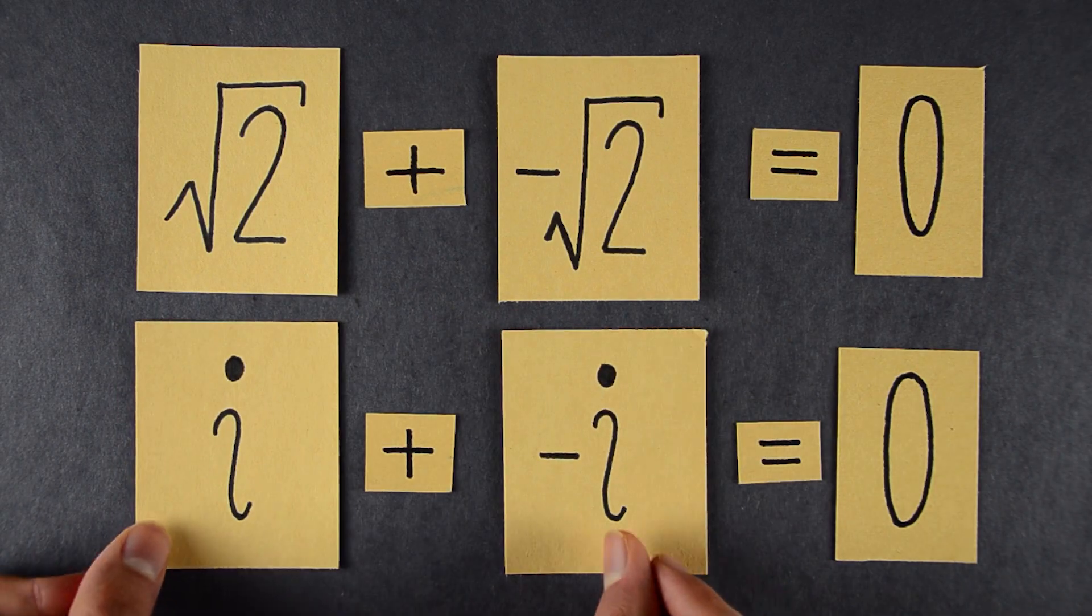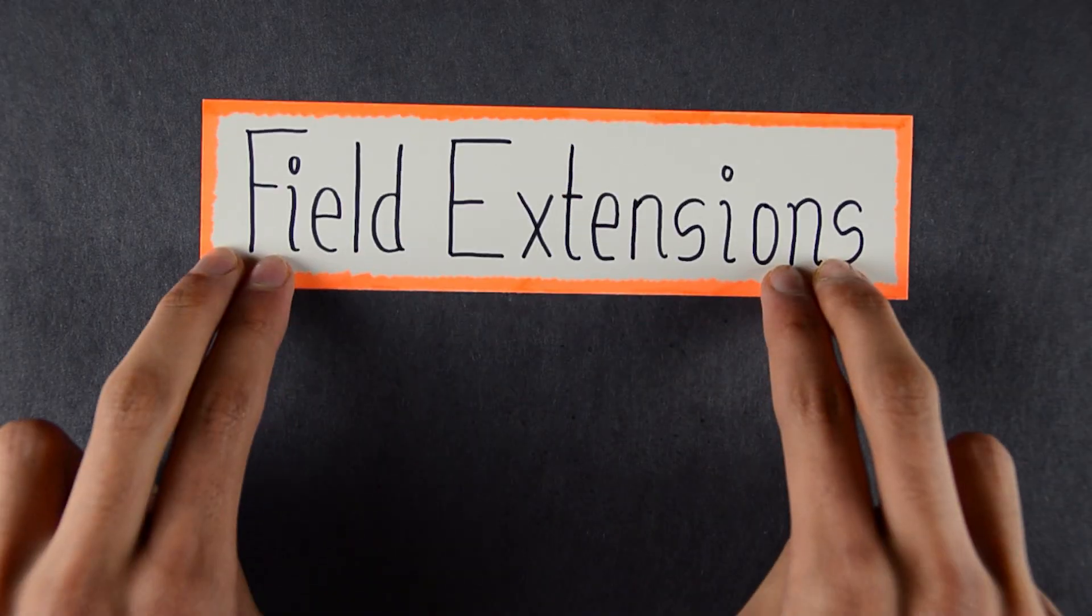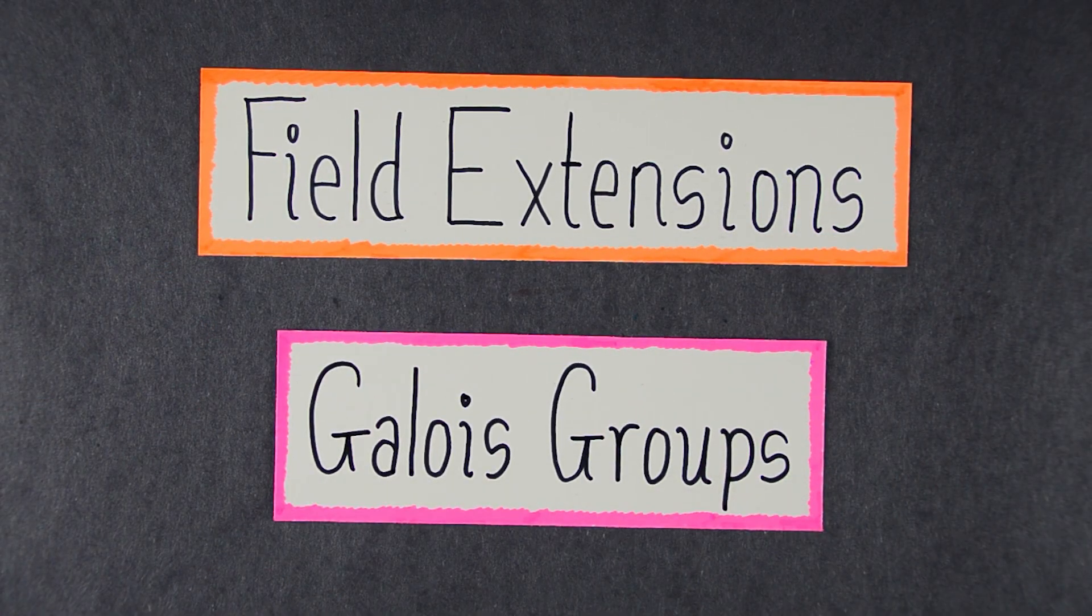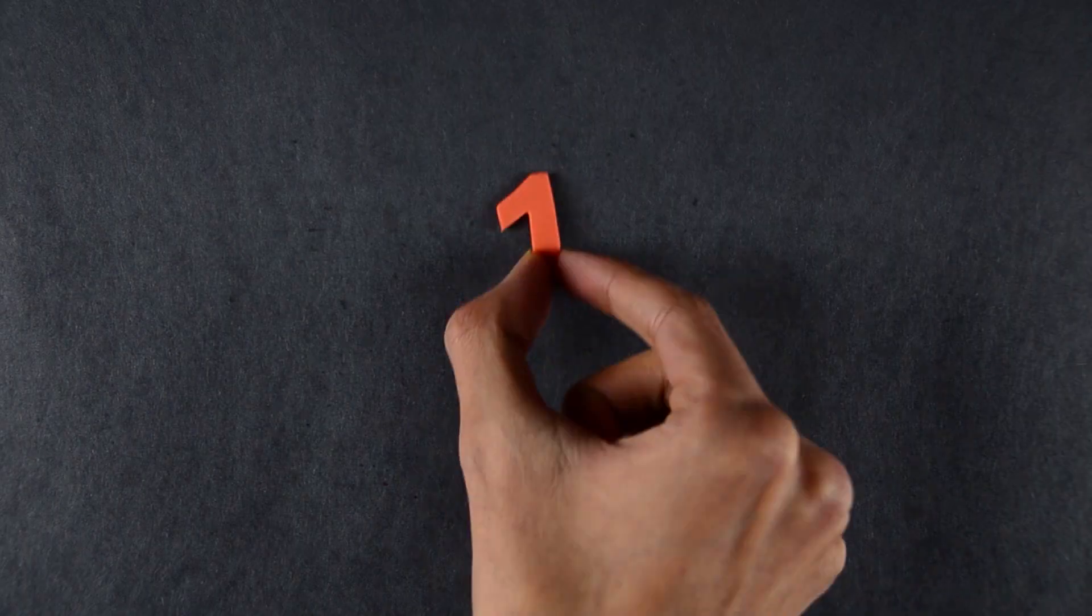But to see it, we have to connect polynomials, fields, and groups. So we'll first talk about field extensions, then the Galois group, and then we'll see how they come together to prove our theorem. Let's get cracking.